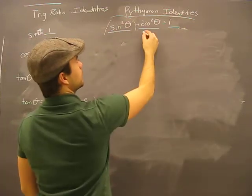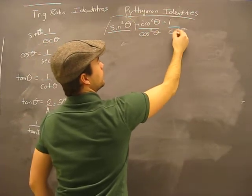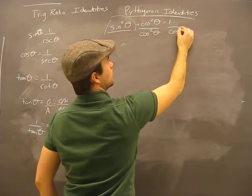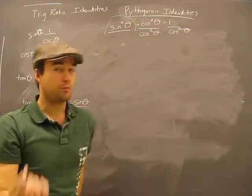Now I'm going to say what happens if we divide by cosine squared? Well, we know that first I'll tell you it'll give us a brand new identity.